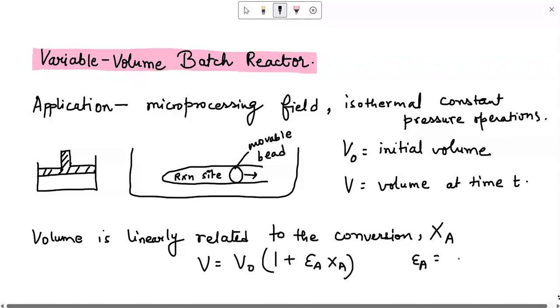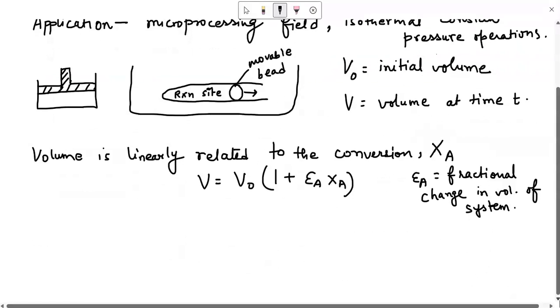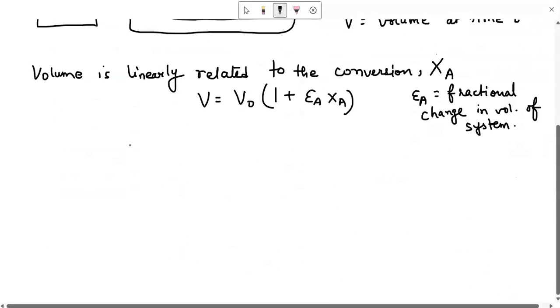This epsilon A is the fractional change in volume of system. This is the fractional change in the system volume. From this expression you can write dXA equals to dV by V0 multiplied by epsilon A.